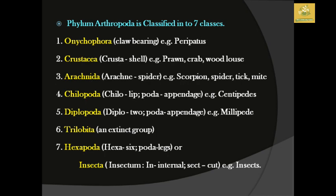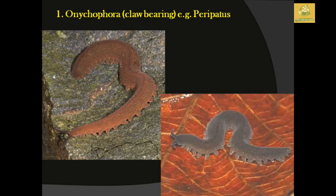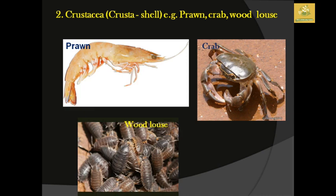Phylum Arthropoda is classified into seven classes. The insects come under Hexapoda, which is classified as class Insecta. The seven classes are: Onychophora (claw-bearing organisms), Crustacea (shell-bearing), Arachnida (spiders, scorpions, ticks, mites), Chilopoda (lip-appendaged organisms, example centipedes), Diplopoda (two appendages, example millipedes), Trilobita (an extinct group), and Hexapoda (six-legged organisms, otherwise known as Insecta, with internal mouthparts — example: insects).